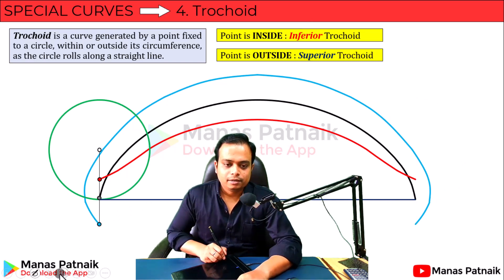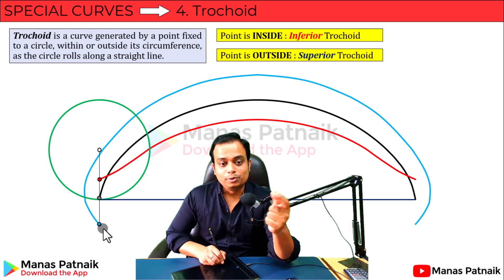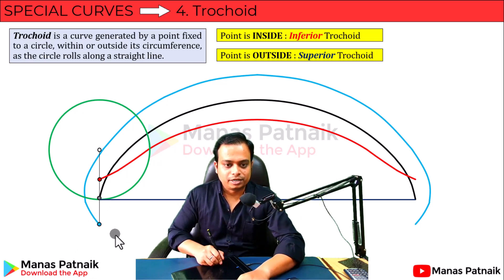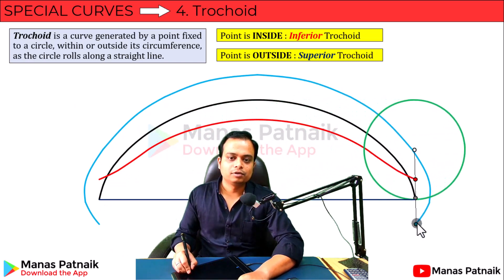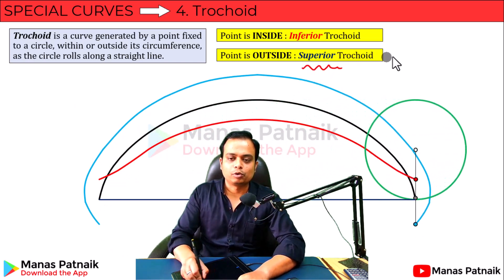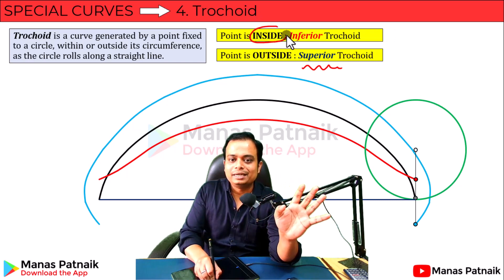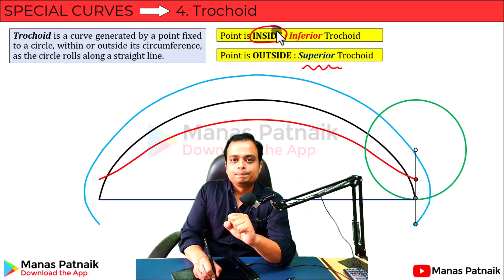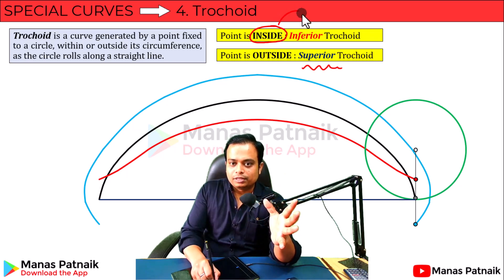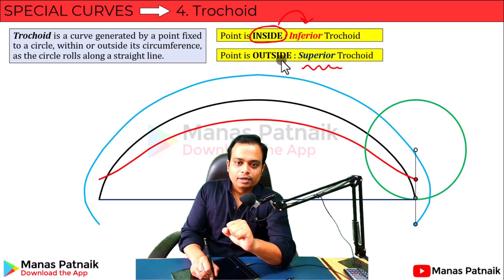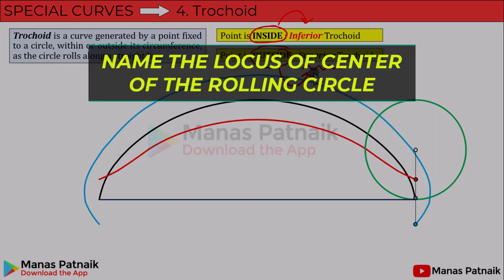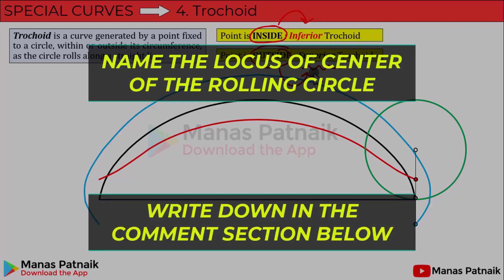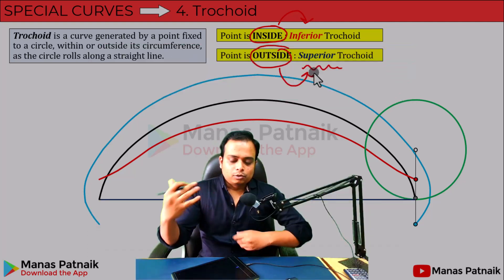And finally, for the point outside — the blue point — it creates a blue trail or curve. This is another curve known as a superior trochoid. So, to summarize: if the point happens to be inside the circumference of the rolling or generating circle, the curve you get is an inferior trochoid. If the point is outside the circumference, the curve you generate is a superior trochoid.